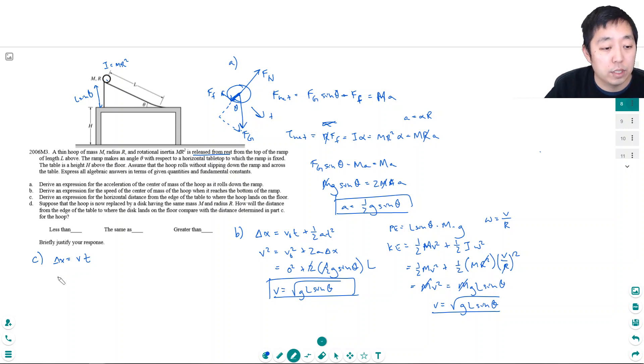Time in the air depends on the vertical distance. In the vertical direction, it travels h with no initial vertical velocity. So h equals one half g t squared, giving t equals square root of 2h over g. Plugging this into distance equals velocity times time: square root of gl sin theta times square root of 2h over g, which simplifies to square root of 2hl sin theta.